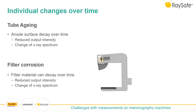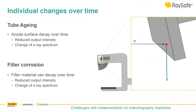On top of model-specific differences, you have individual changes on the machine that happen over time. For example, tube aging results in reduced output intensity and changes the X-ray spectrum. When the anode surface becomes rough, you get increased HVL and reduced dose output. You have the same effect with filter corrosion — not all materials corrode, but some do, resulting in reduced intensity and a changed X-ray spectrum.